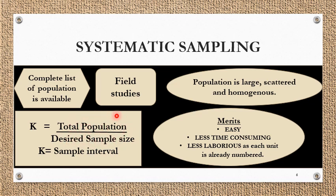For example, if the population is 1000 and we want a sample size of 100, our K — that is the sampling interval — will be 10. We write numbers from 1 to 10, take one card out, and if number 3 comes, then house numbers 3, 13, 23, 33, and so on will be considered our sample. We can select the whole family or randomly choose one or two members. This can be done when a complete list of the population is available, and it is used in field studies.